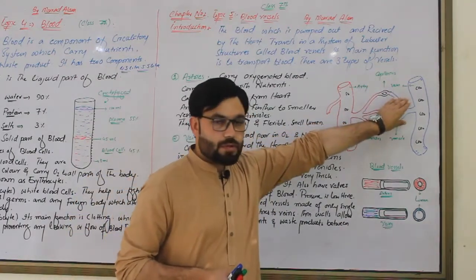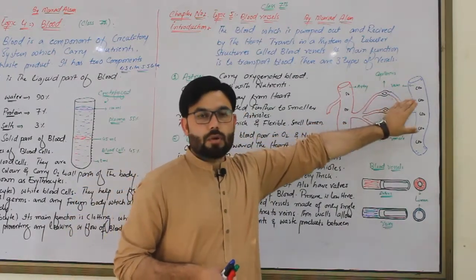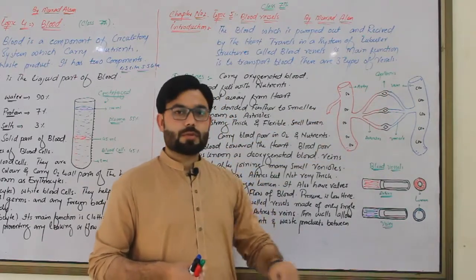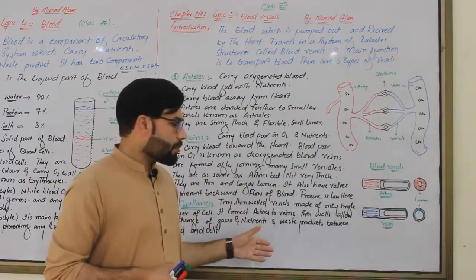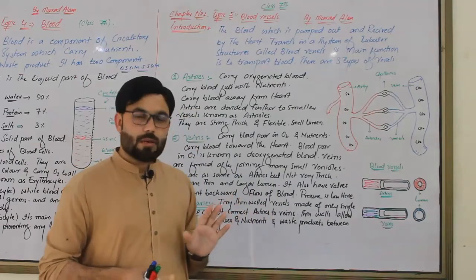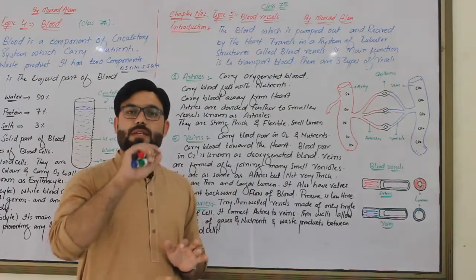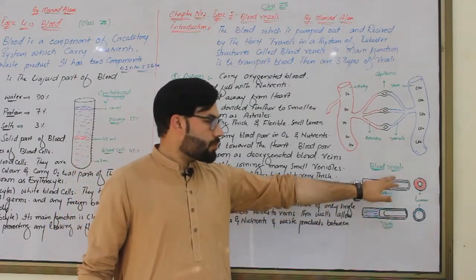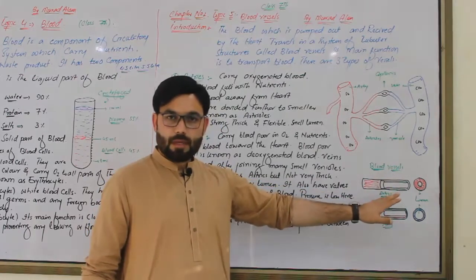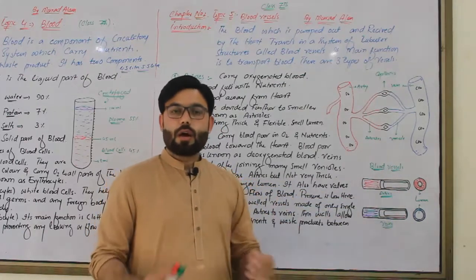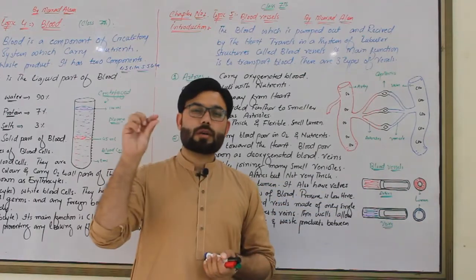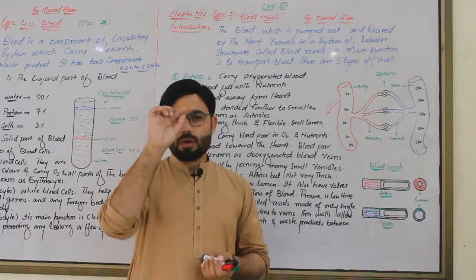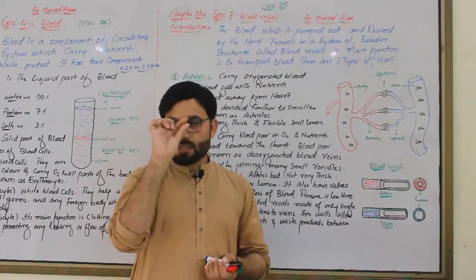The pressure in veins is lower than in capillaries. Capillaries are made of a single cell layer — they consist of only one single layer of cells, not three layers like arteries or veins.